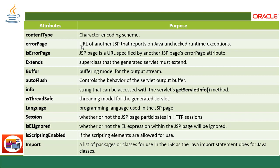Additional page directive attributes include: autoFlush, which controls the behavior of the servlet output buffer; info, to provide the getServletInfo method; isThreadSafe, for implementing multi-threading; language, the programming language used in the JSP; session, to maintain sessions from HTTP protocol; EL (Expression Language) — if you want to ignore expression language you can use this attribute; isScriptingEnabled, if scripting elements are allowed; and import, which is a list of packages or classes for use in the JSP, similar to a Java import statement.